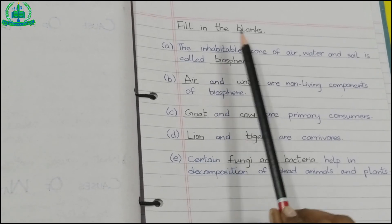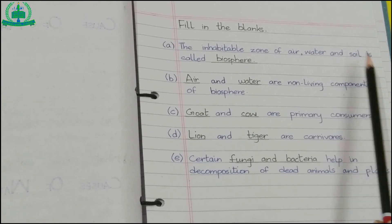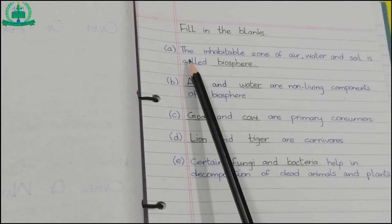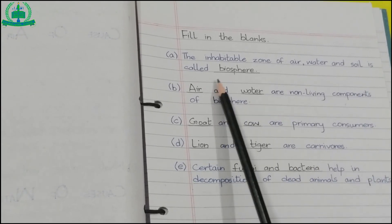Next, fill in the blanks. A. The inhabitable zone of air, water, and soil is called biosphere.